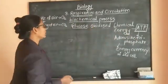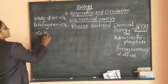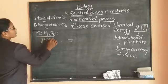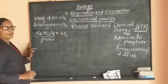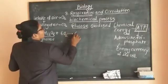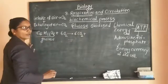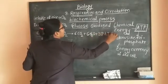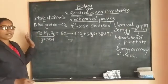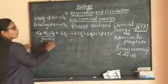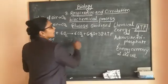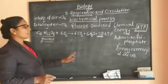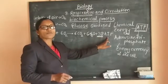If you observe the equation: the glucose molecule, that is C6H12O6, is oxidized in the presence of oxygen. After the completion of the process, there is release of 6 carbon dioxide molecules, 6 water molecules, and formation of 38 ATP molecules. Most importantly, when one glucose molecule is oxidized, from this one glucose molecule, there is formation of 38 ATP molecules, which is the chemical form of energy.